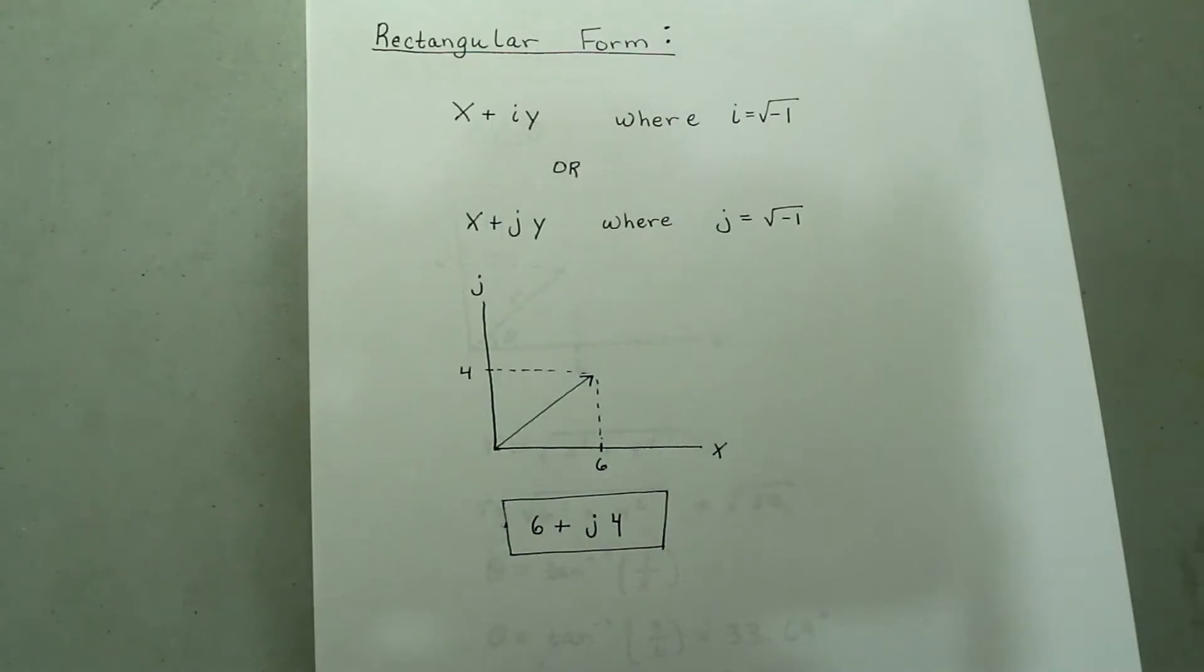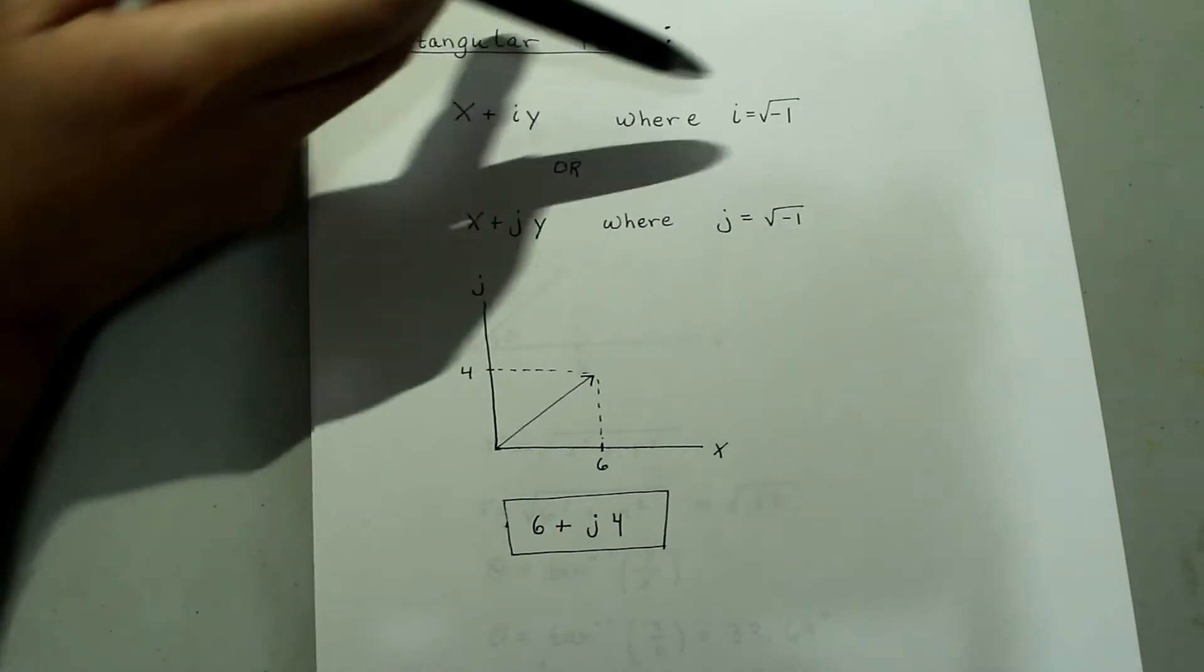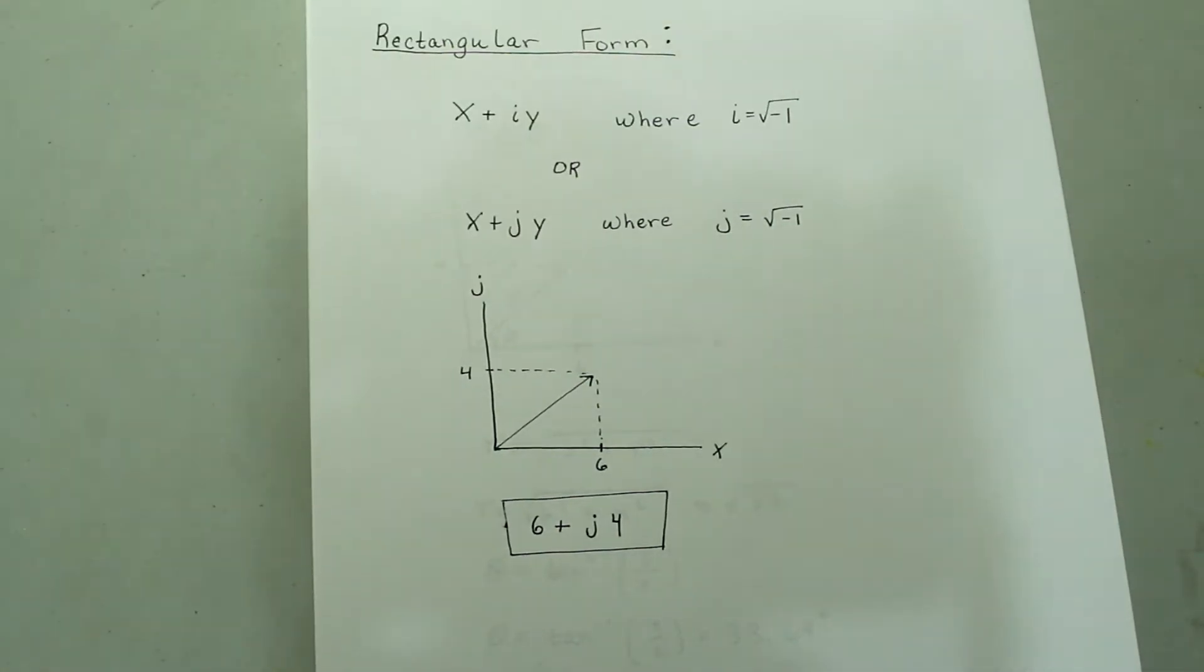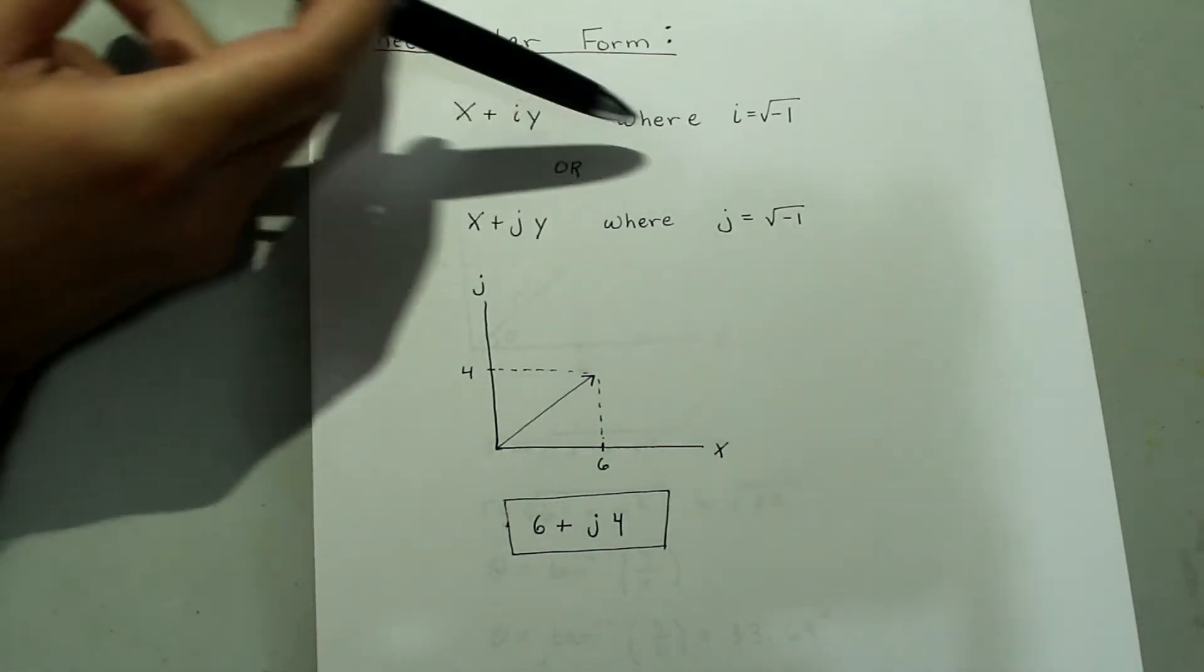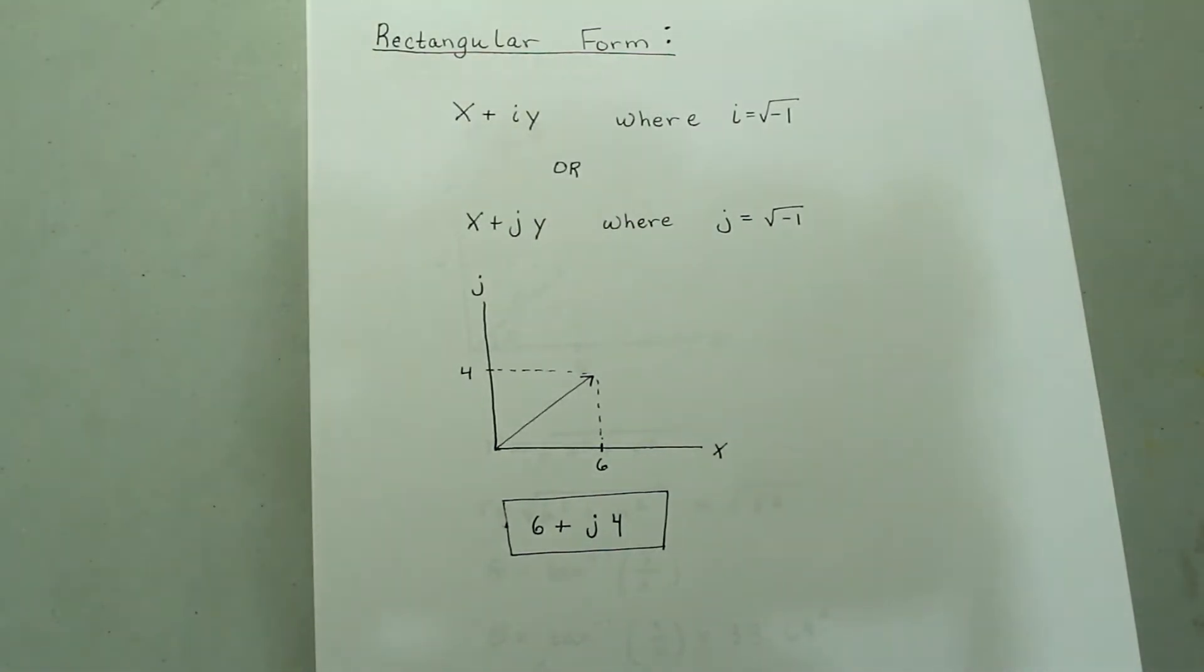First, let's do a little bit of review of the concepts before we go for the built-in calculator features. The rectangular form is x plus iy, where i is the square root of negative 1, so this is just a complex number. Or in electrical engineering, you might see j instead, where j represents the square root of negative 1.